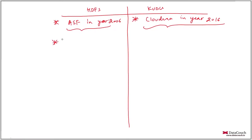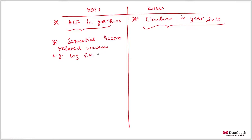HDFS is very good for sequential access related use cases. For example, if you are doing some kind of log file analysis and reading your data from beginning to end, that's a sequential access use case. Sentiment analysis — reading review comments from beginning to end — is another example of sequential access.